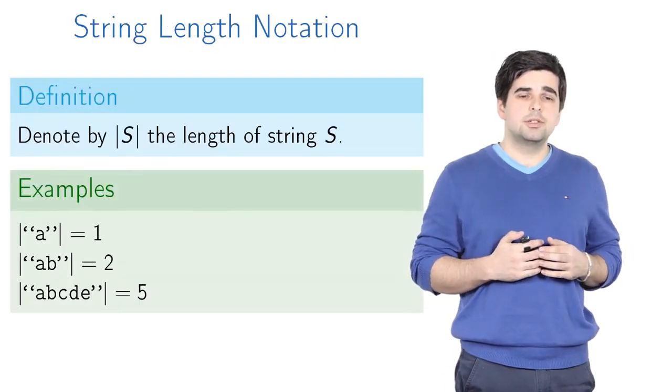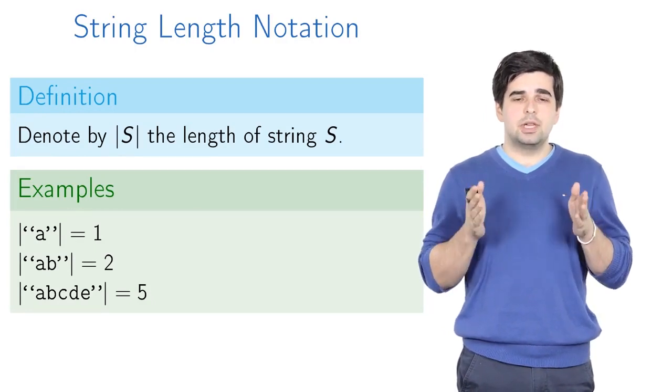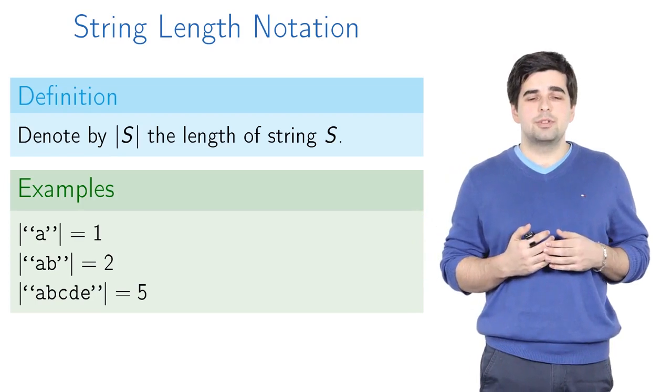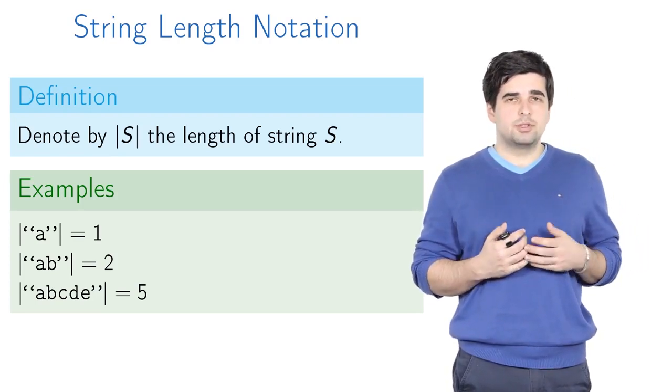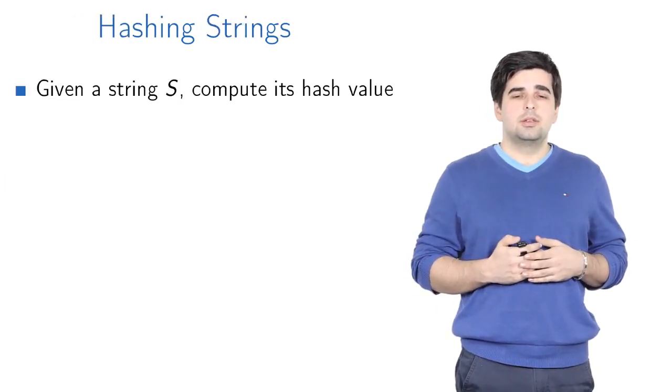But first, let's introduce a new notation. Denoted by s enclosed in vertical lines, the length of string s. For example, the length of string a is 1, length of string ab is 2, and length of string abcde is 5.